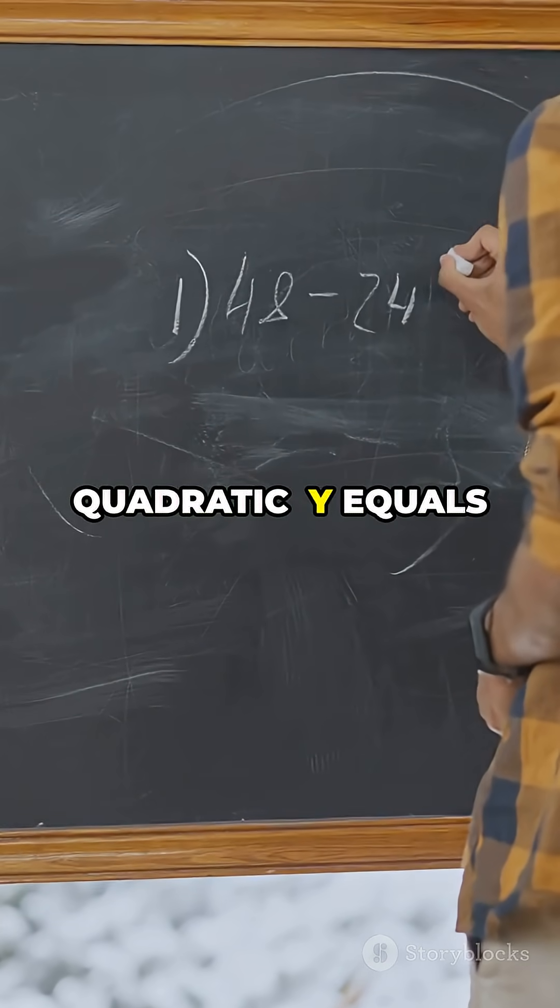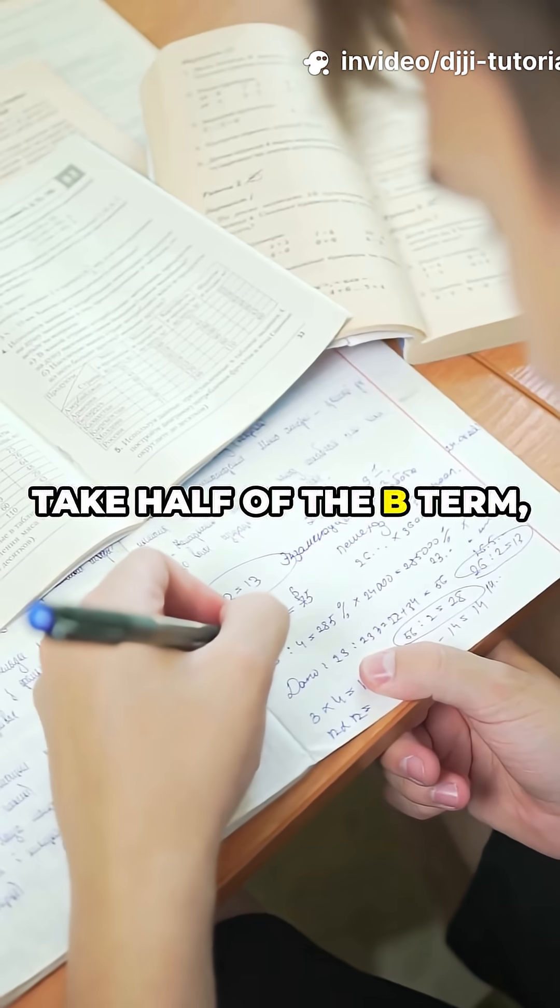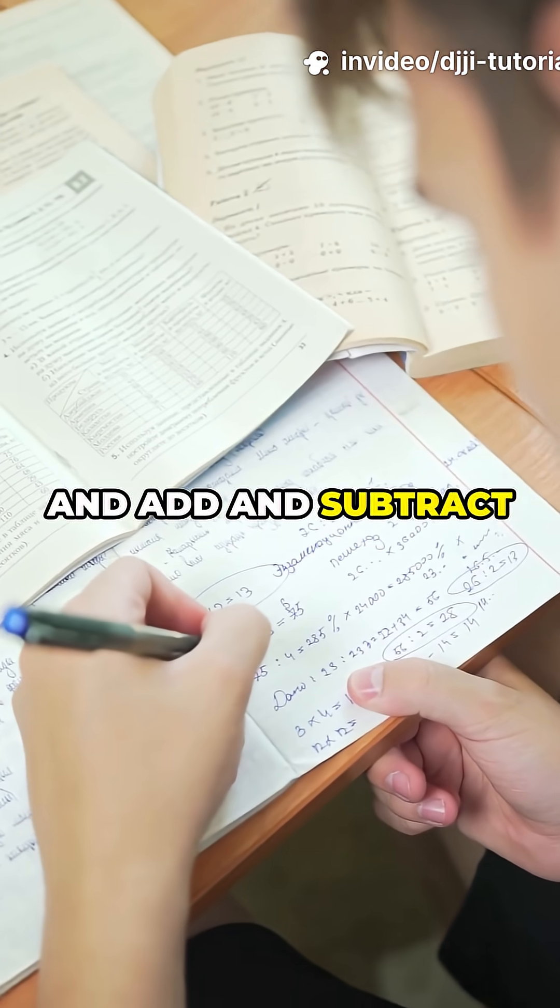To complete the square, start with a regular quadratic y equals x² + bx + c. Take half of the b term, square it, and add and subtract it right in the equation.